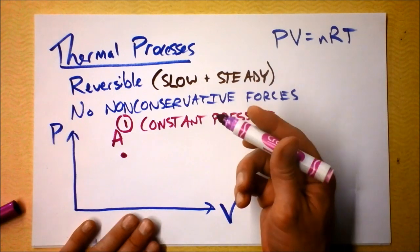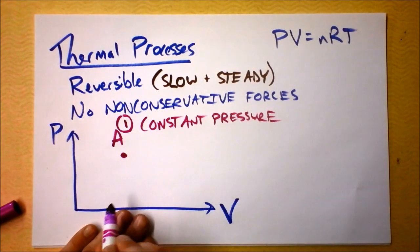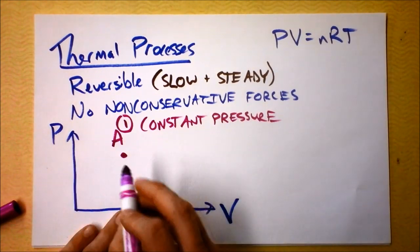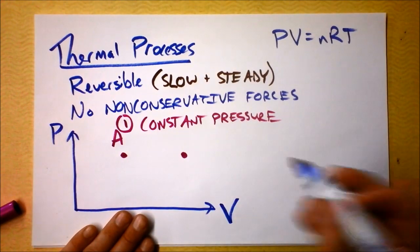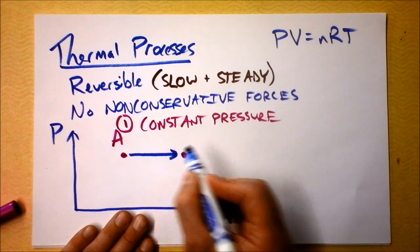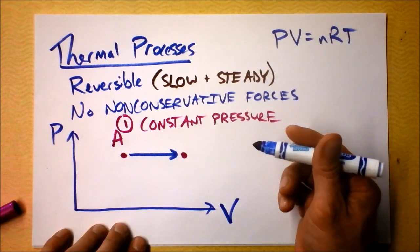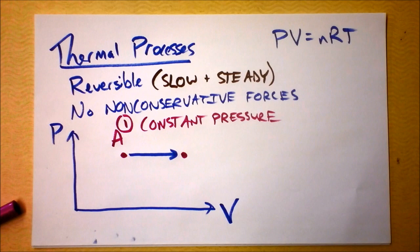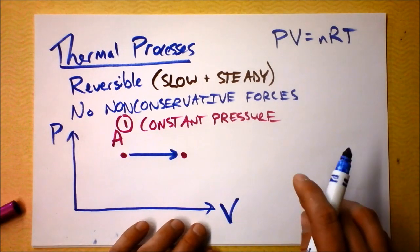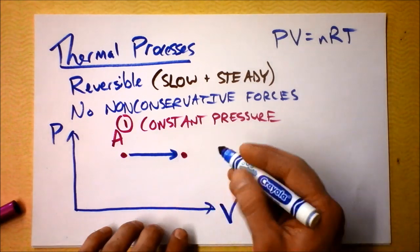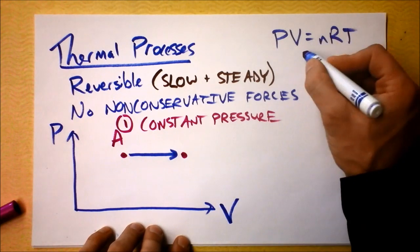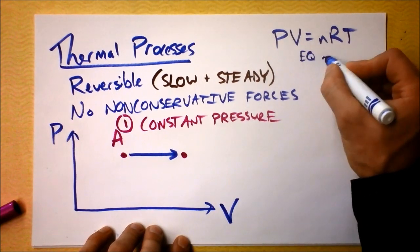If we keep the pressure the same, then we would go horizontally on the graph. I could go from state A to state B with a horizontal line that keeps the pressure the same. The state of the system is defined by the location on this PV graph, because this is an equation of state.